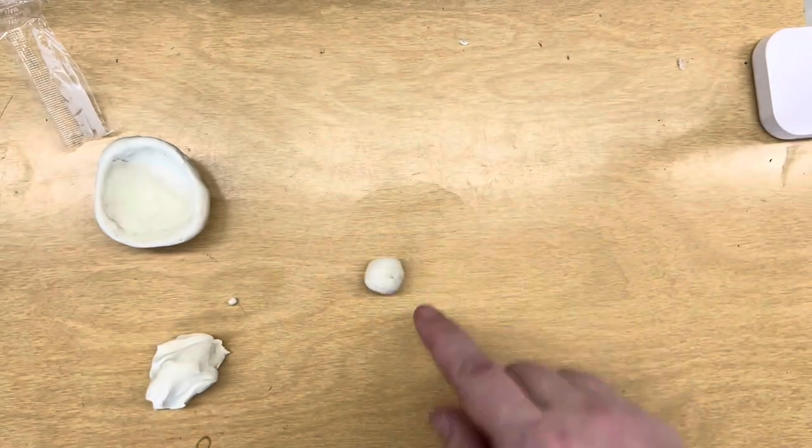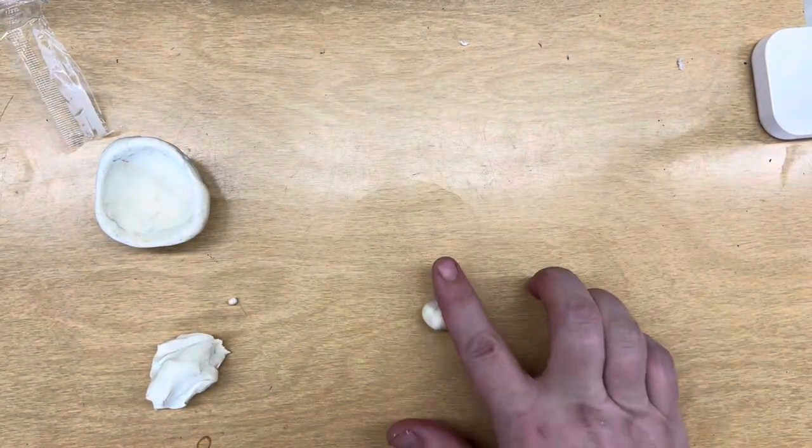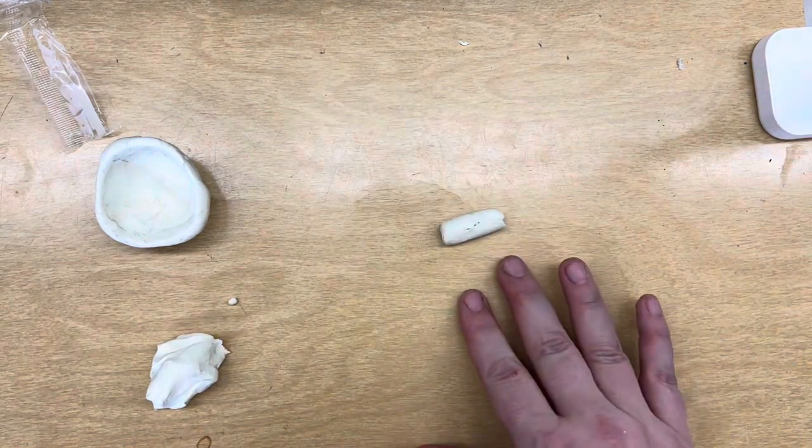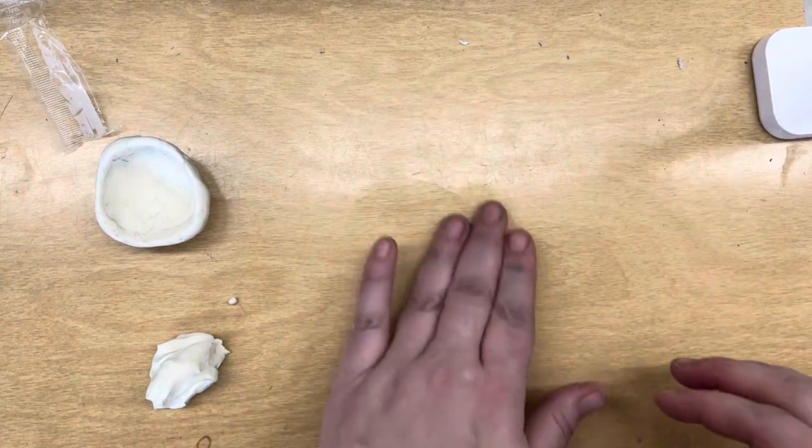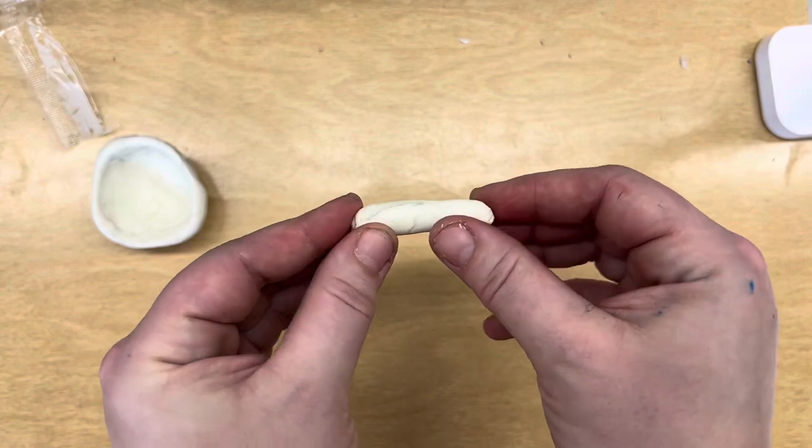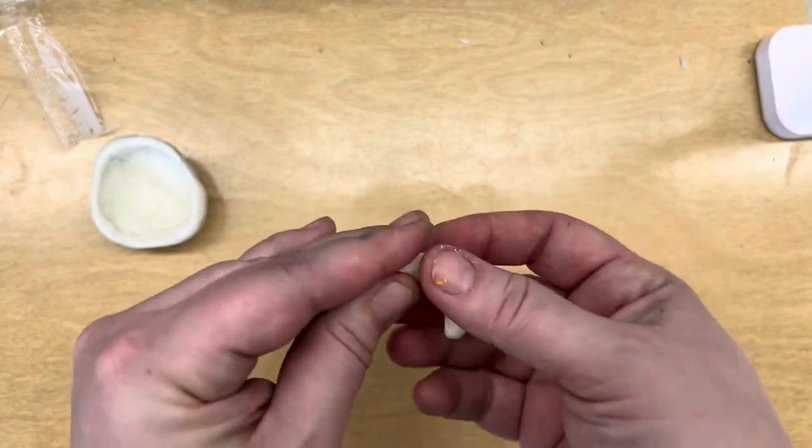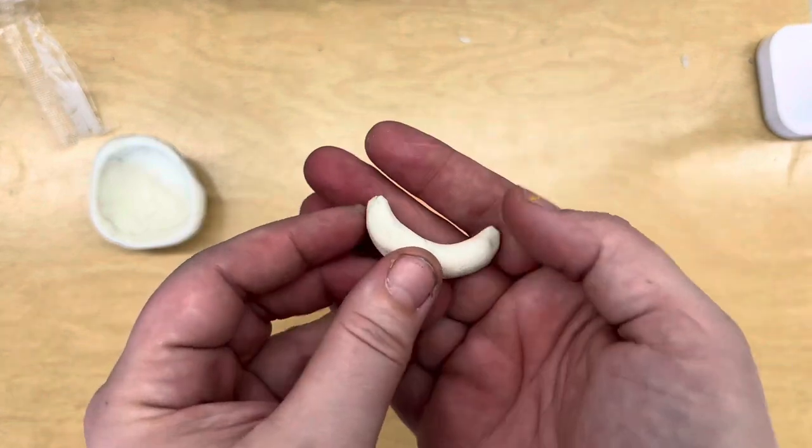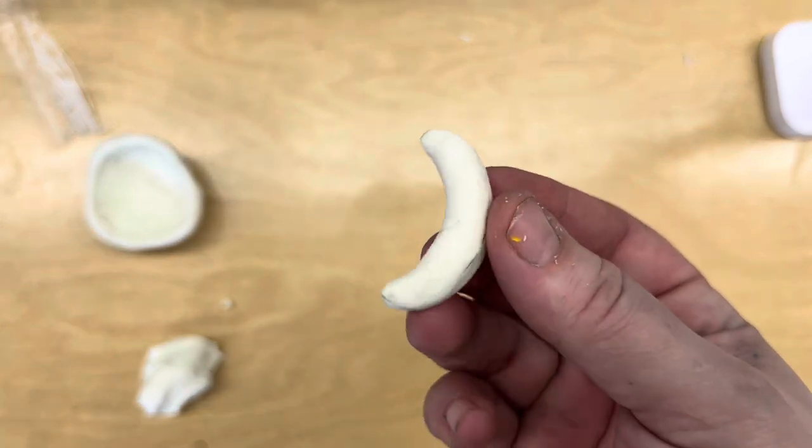And I can make a banana by taking a sphere, rolling it back and forth. It starts to develop into a longer pill shape. And then once I think it's a good banana size, I pinch the ends and give it a curve. So my banana is smooth and curvy. So if it was yellow, it would look like a really tiny banana.